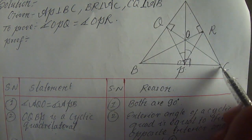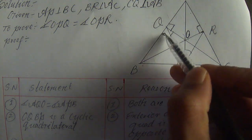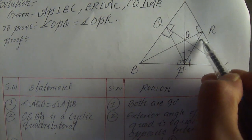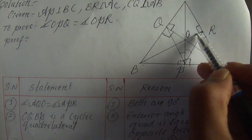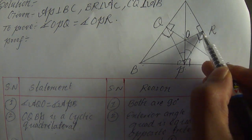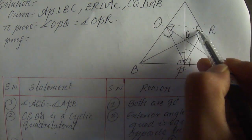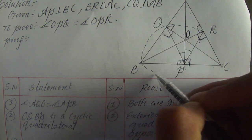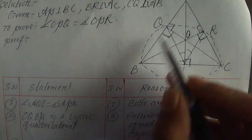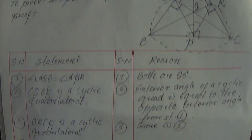Angle AQC equals 90 degrees. Angle AQC equals 90 degrees. Angle BQC equals 90 degrees. Angle BRC — AQC, AQN, AQC equals zero... BQC like inscribed angle in a circle. BQRC joined in a circle. BQRC is also a cyclic quadrilateral.